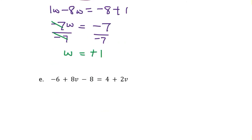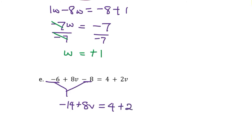Finally, example E: what if you have more than one constant on one side? We do the same thing — solve the constants first. Negative 6 minus 8 gives negative 14. What you're left with on the left side is negative 14 plus 8v, and this equals 4 plus 2v. This cleans things up so we can proceed.